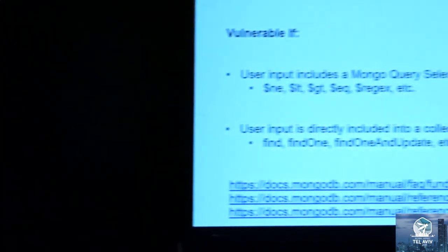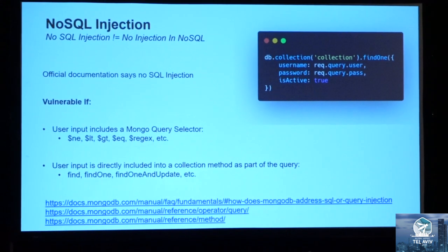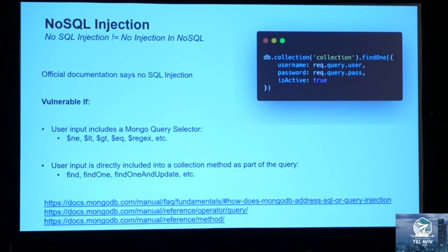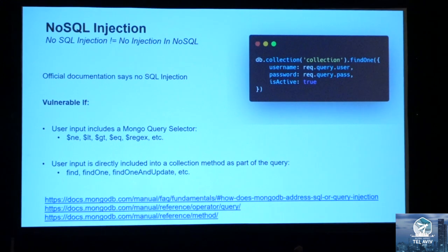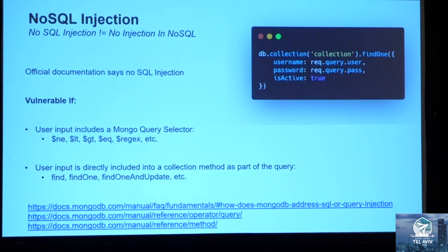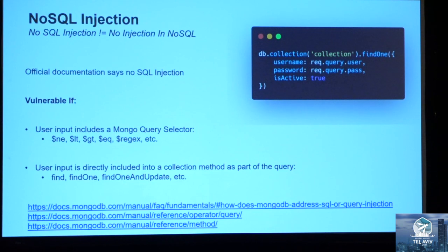The first thing I want to talk about is NoSQL injection. The official Mongo documentation states it is not vulnerable to traditional SQL injection attacks because objects are represented in BSON queries. But whilst it might not be vulnerable to traditional SQL injection, it is still vulnerable to injection attacks if user input is directly included in a collection method. One example is a findOne collection method trying to retrieve a user from the database. This can be abused if you include a Mongo query selector such as $NE (not equals to) or $GT (greater than), which you can use to bypass authentication and log into the application.